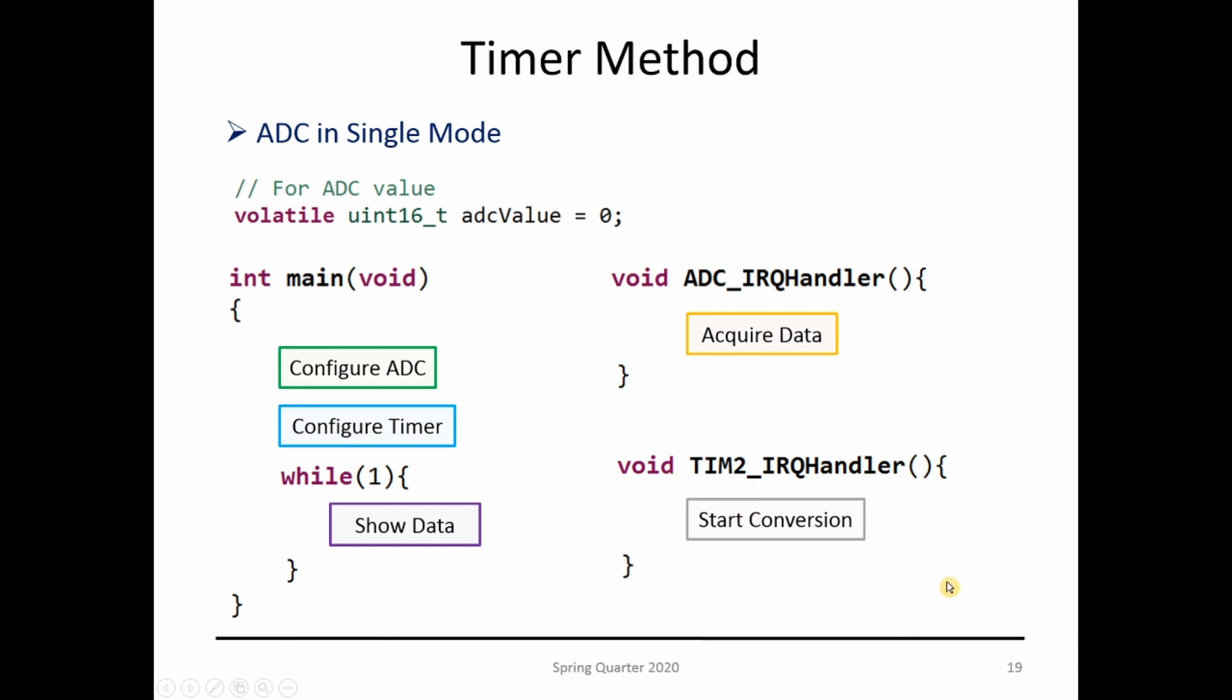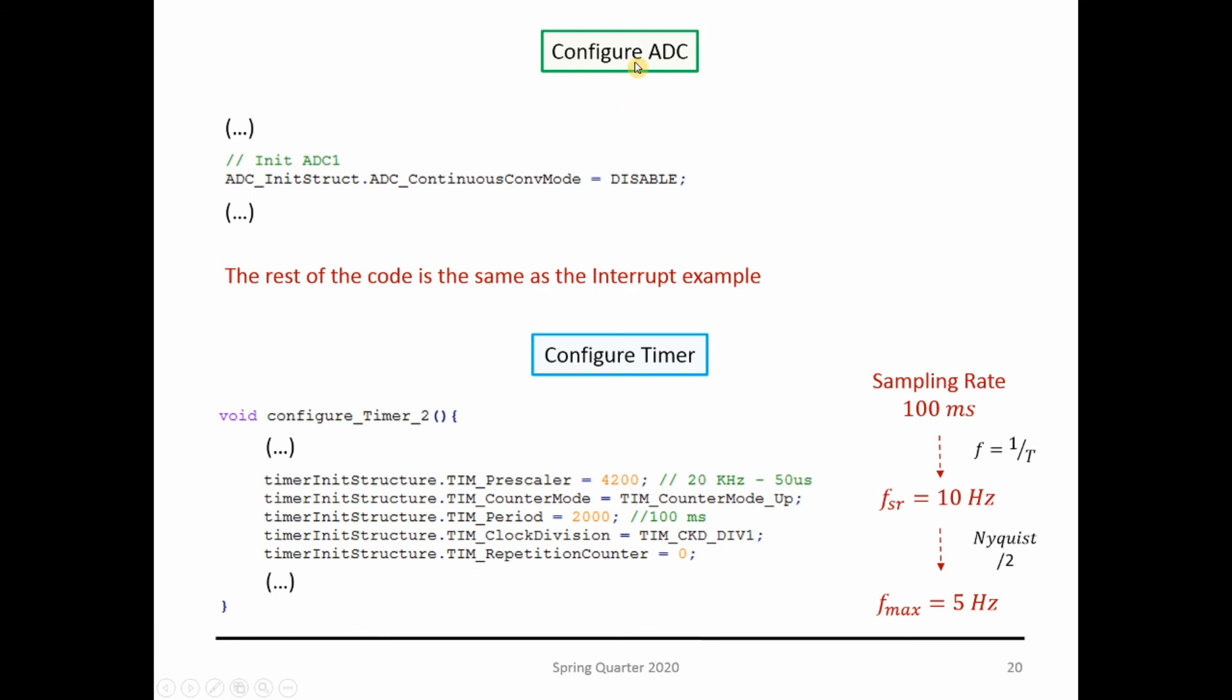If I look at the code, configuring the ADC is the same except I disable continuous mode so it's in single mode. For the timer, you're familiar with parameterizing it. You can change the sampling rate or timing here. In this case, sampling rate is set to 100 milliseconds, which if I do the inverse is 10 Hz. Nyquist tells you to sample at least twice, so the maximum frequency on my channel is 5 Hz. But we can change these—it's a matter of changing these variables to get the desired sampling rate.